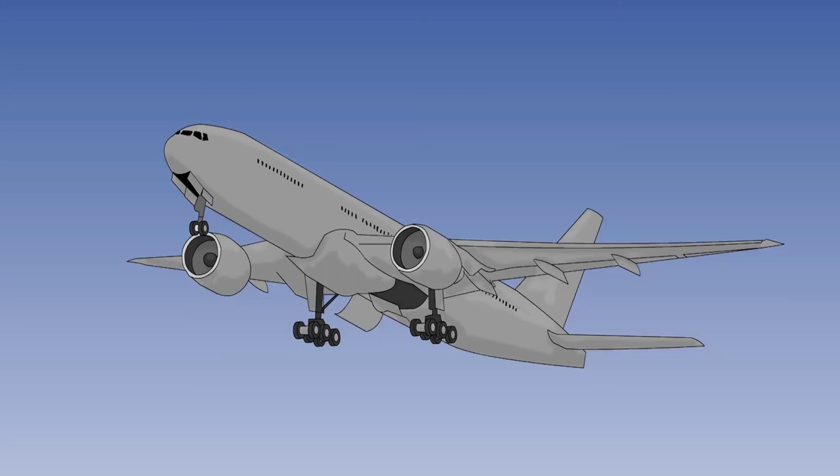The control surface deflections required to balance asymmetric thrust will also cause drag. It is essential, therefore, that after an engine failure, particularly during take-off or go-around, drag is reduced and no turns are made until safely clear of the ground.